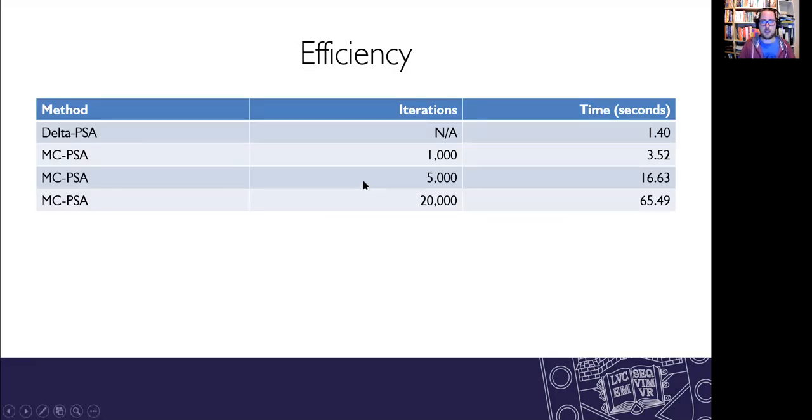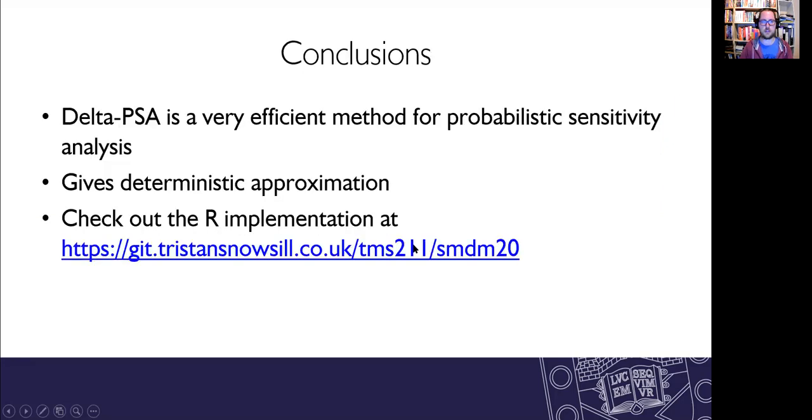The delta PSA method was very efficient. It only took 1.4 seconds to run versus over a minute to do the Monte Carlo PSA with 20,000 iterations. Obviously you can reduce the number of iterations and it will run faster. Also could have spent some time using parallelized computing or something. But as an indication, it's very efficient.